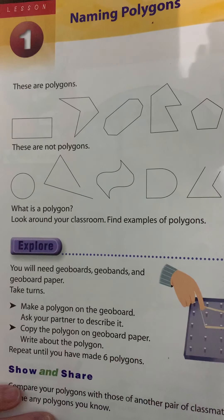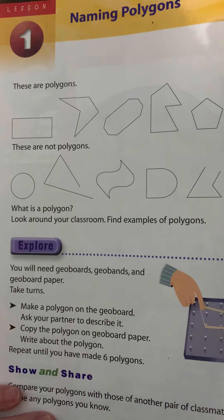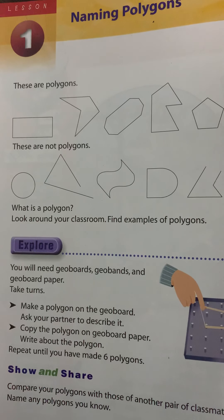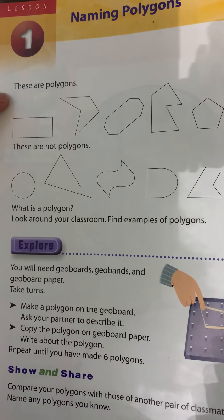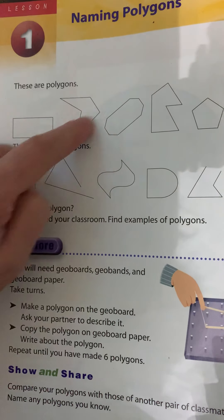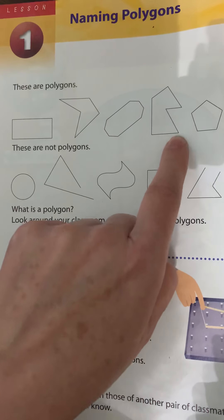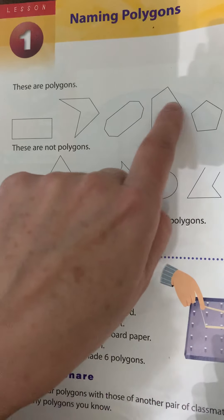Yesterday at our Zoom meeting, I introduced polygons. We had a little discussion of what a polygon is. We said that a polygon has to have straight lines and it has to be a closed shape. So here in the textbook, they have some examples of these being polygons because they all have straight shapes and they are all closed shapes.